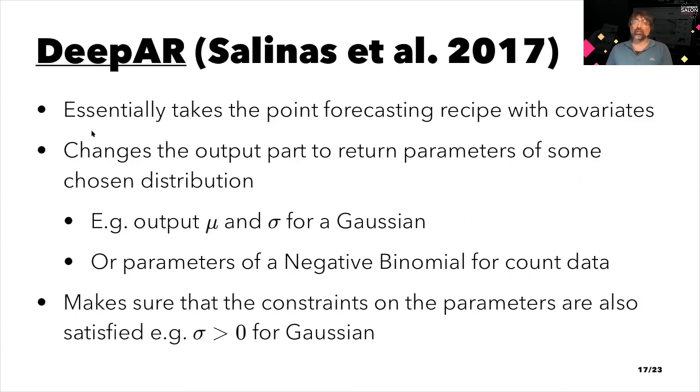The DeepAR method from Amazon AI labs essentially replaces the point forecasting part I showed you with a module which outputs parameters of some chosen probability distribution. For example, the mean and variance which defines a Gaussian, or the parameters of a negative binomial if our time series is count data. Our job, at least the job of the neural network, is to make sure to enforce the constraints that the parameters of these chosen distribution need to enforce. For example, the variance of the Gaussian needs to be positive. So, we just need to make sure the deep learning model outputs positive values for this particular parameter of the Gaussian.